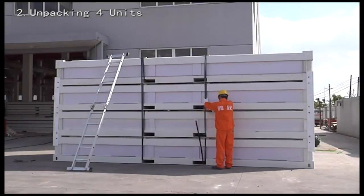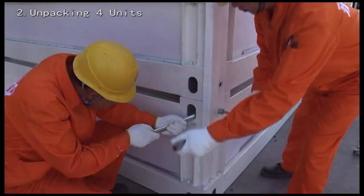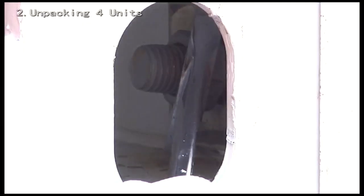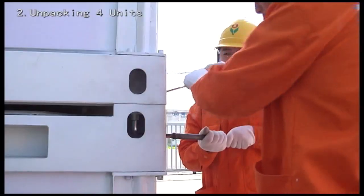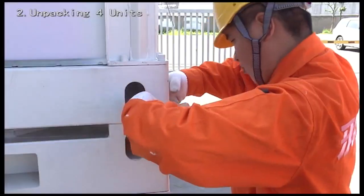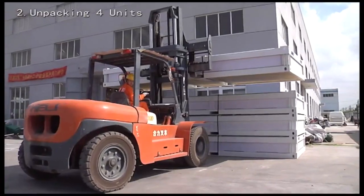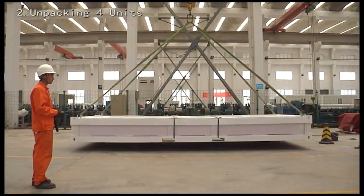Cut four units packing belt. Remove bolts and connecting plate. Then deliver the units to the installation area.